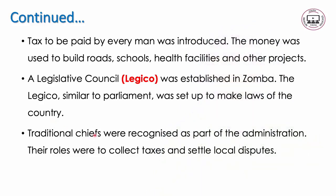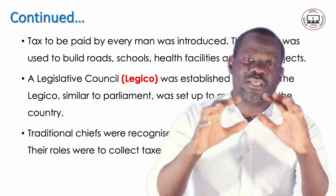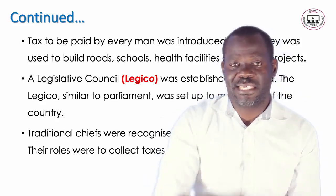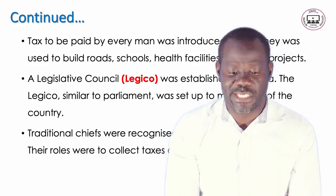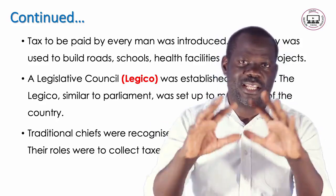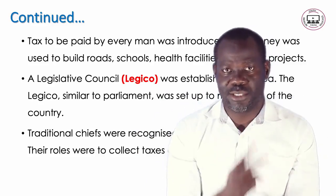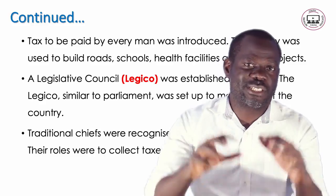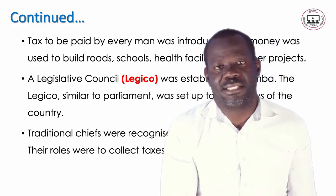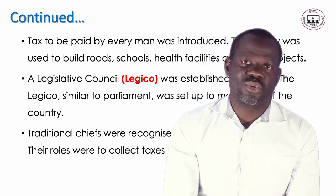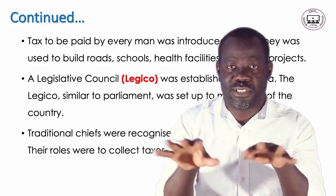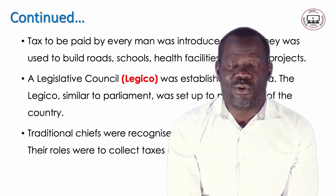Traditional chiefs were recognized as part of the administration. They had two major roles: number one, to collect taxes from the people and bring the money to the government; and number two, to settle local disputes.